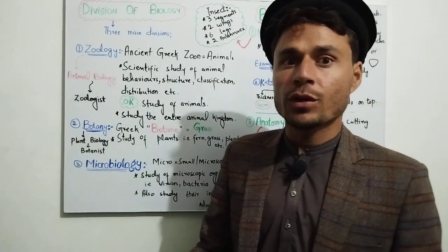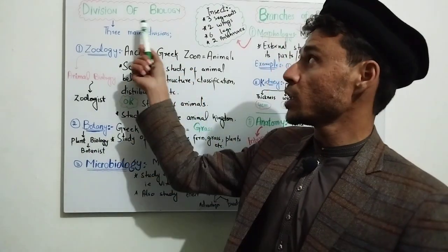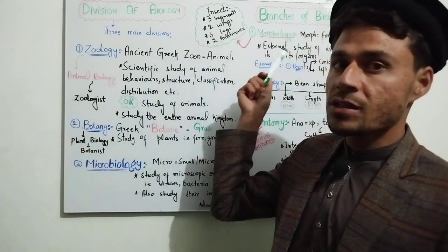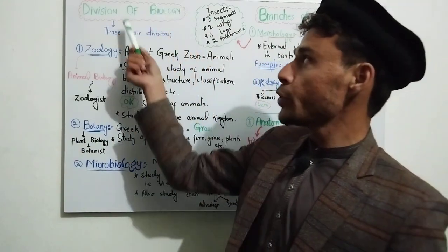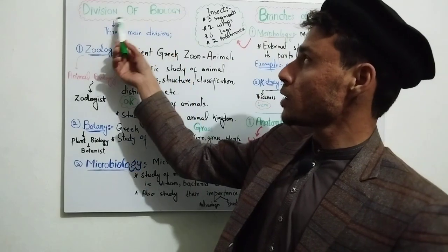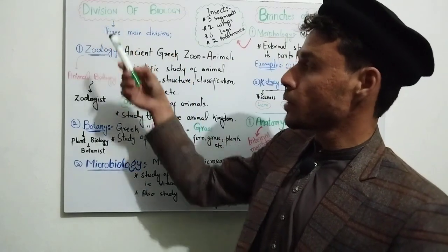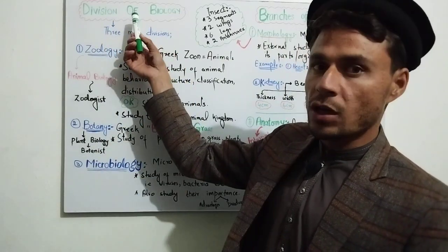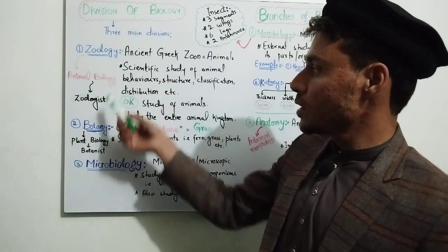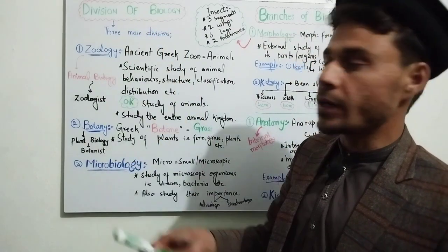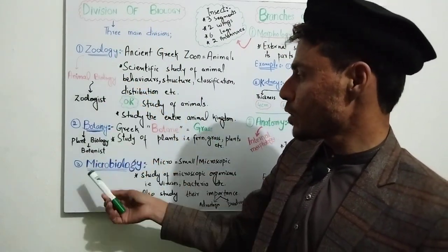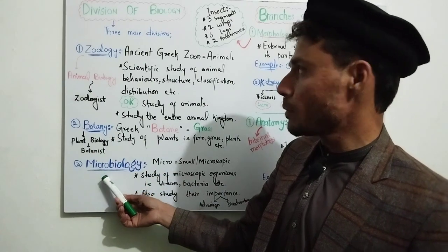A new topic I want to cover is that the divisions of biology are often confused with the branches. Biologists divide biology into three fields: zoology, botany, and microbiology.